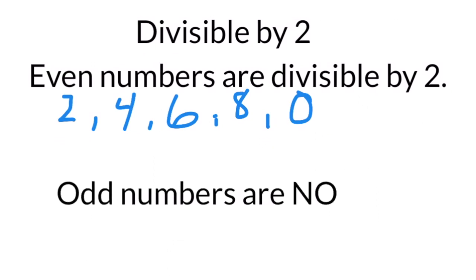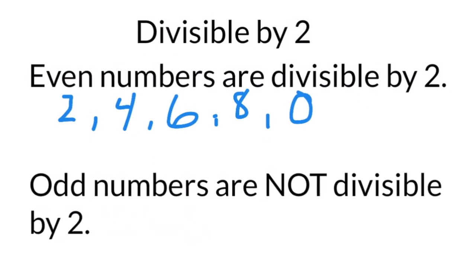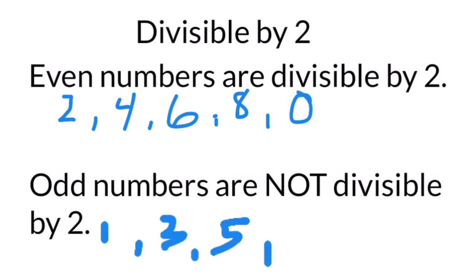Odd numbers are never divisible by two — they're always going to have a remainder. You can determine an odd number by the fact that the digit at the end is either going to be a one, three, five, seven, or nine.